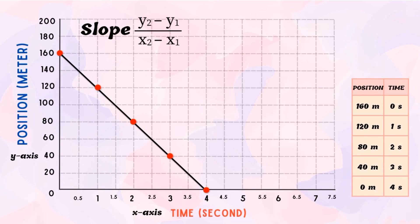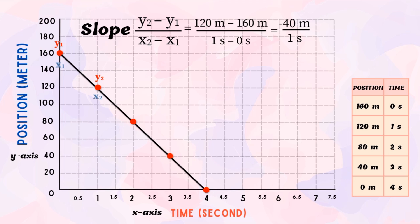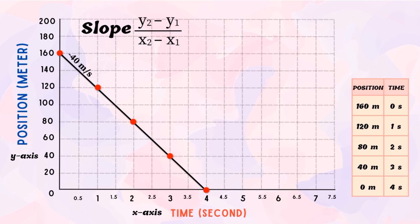In our third example, the line slants down from left to right, giving a constant and negative slope. Applying rise over run: for the first two points, y₂ = 120 meters, y₁ = 160 meters, x₂ = 1 second, x₁ = 0 second. So 120 − 160 = −40 meters, and 1 − 0 = 1 second. Therefore −40 ÷ 1 = −40 meters per second. The velocity is negative 40 meters per second. To prove it is a constant negative slope, we compute each successive pair of points.